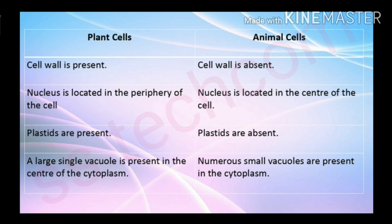Plastids are present in plant cells but absent in animal cells. A large single vacuole is present in the center of the cytoplasm in plant cells, but in animal cells, numerous small vacuoles are present in the cytoplasm.